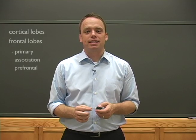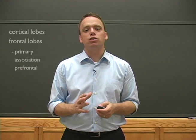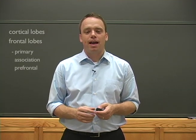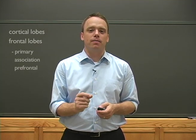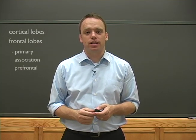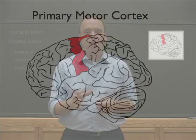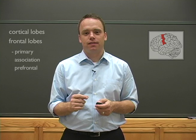The primary motor cortex is the most posterior part of the frontal lobe, and it's a thin strip that runs parallel to the central sulcus. Interestingly, the primary motor cortex consists of a direct mapping for every muscle that it controls in the body. We call this the motor homunculus.